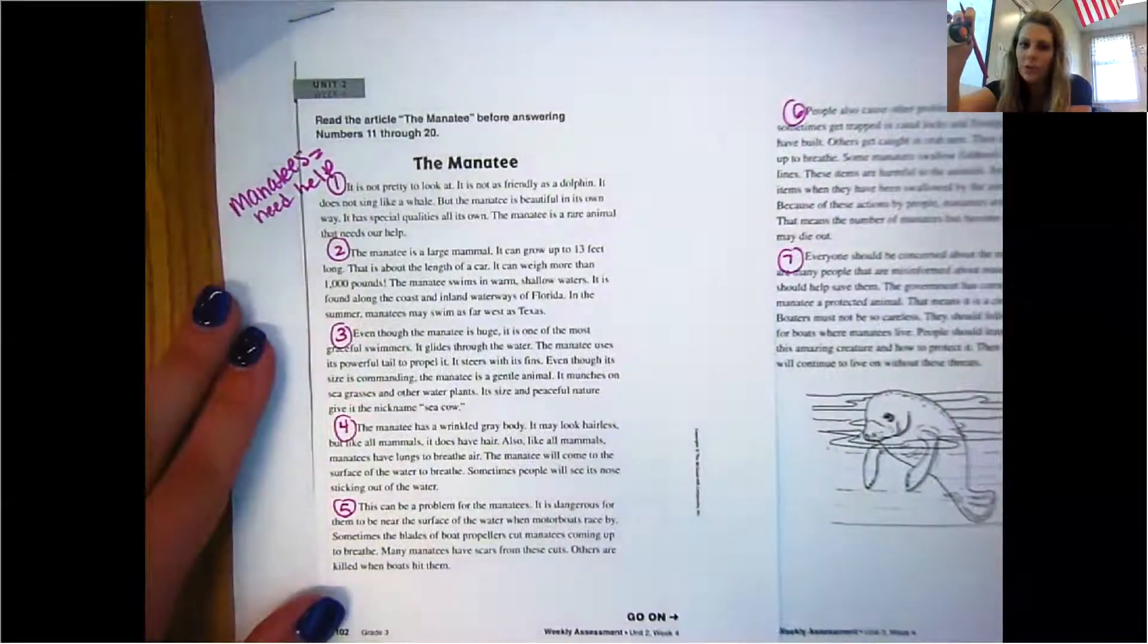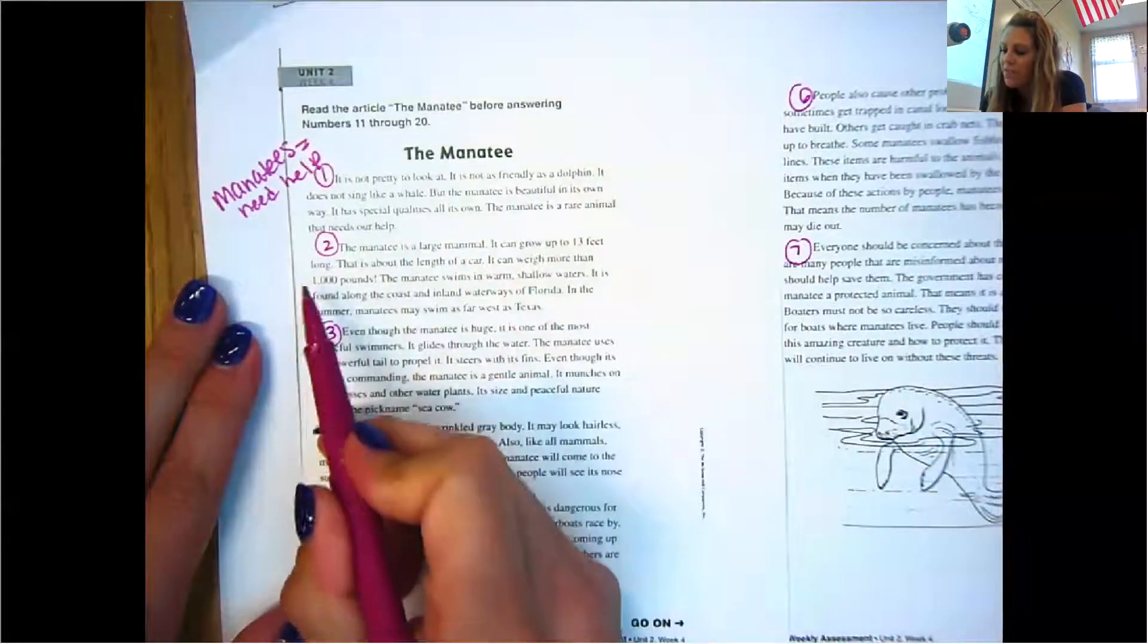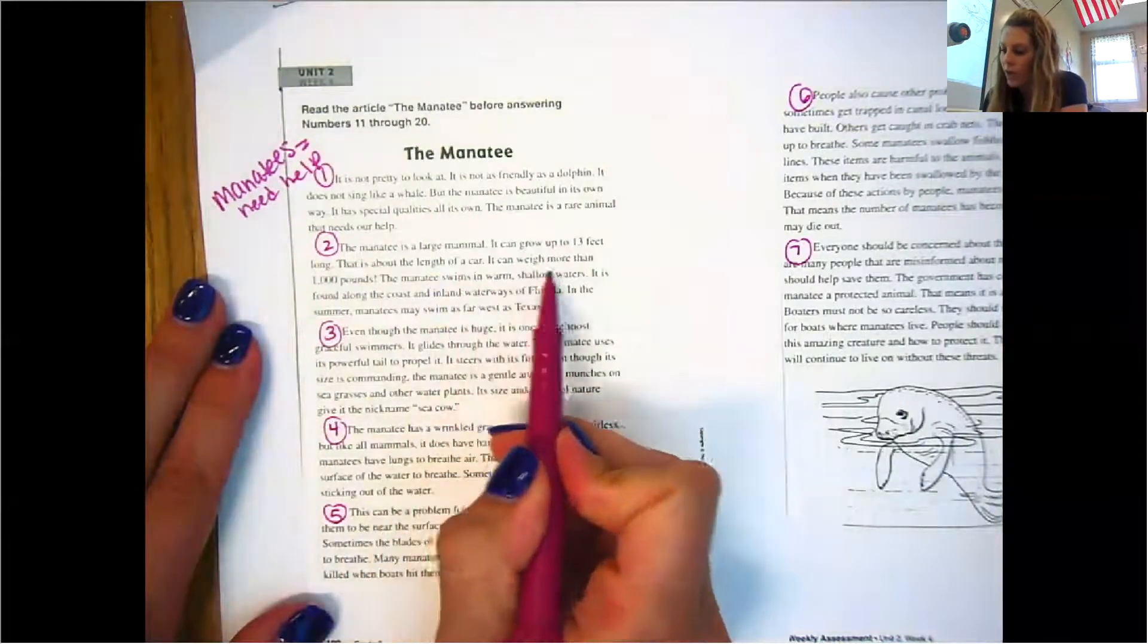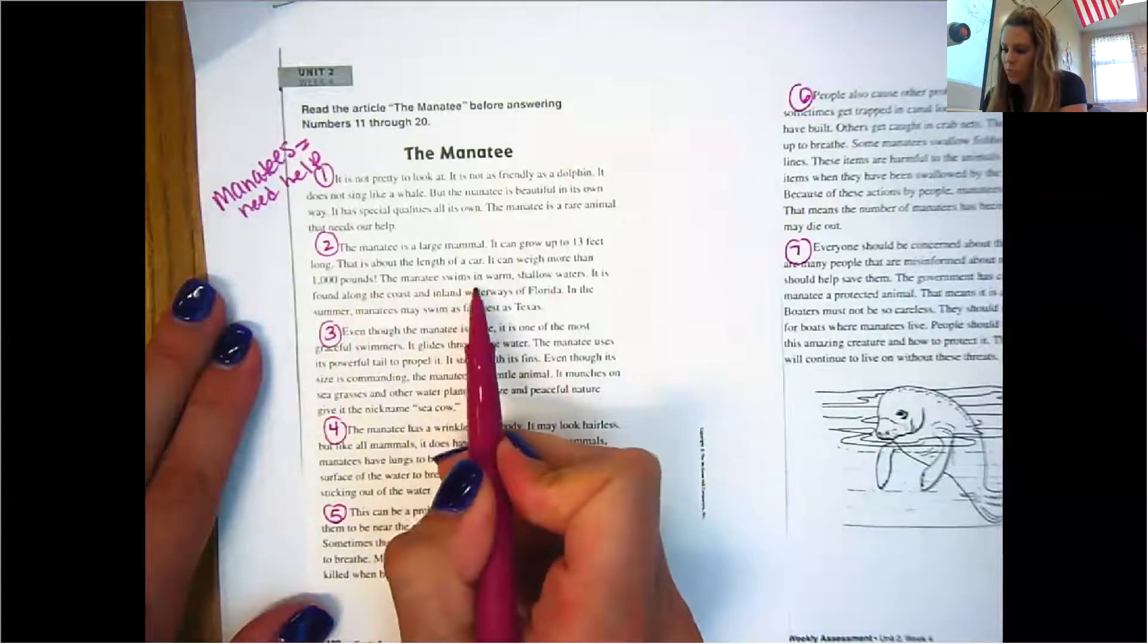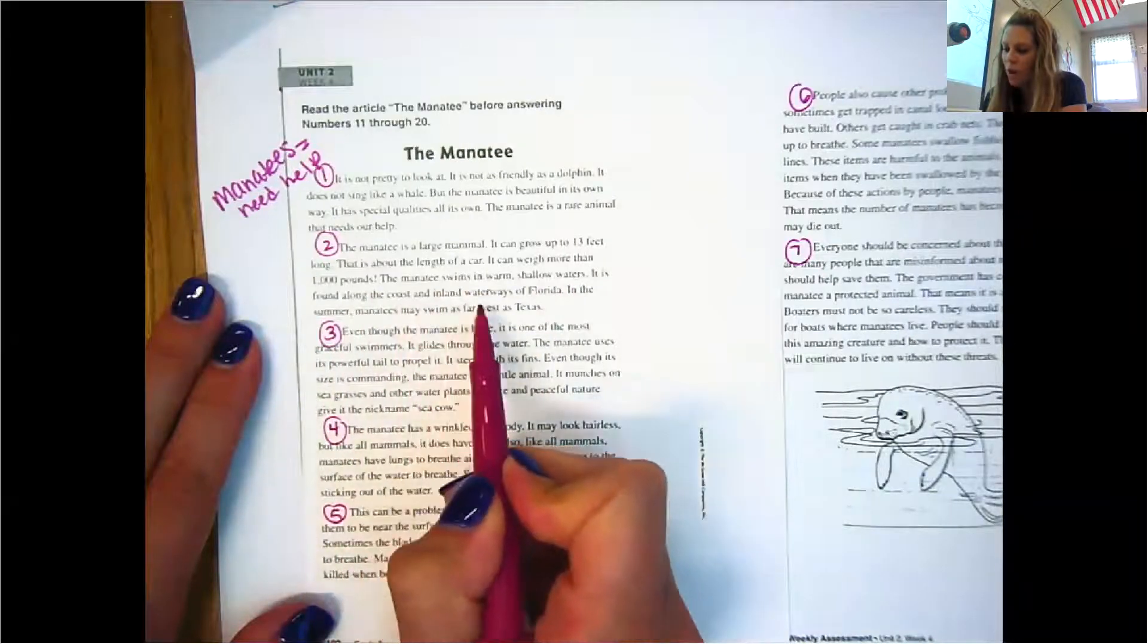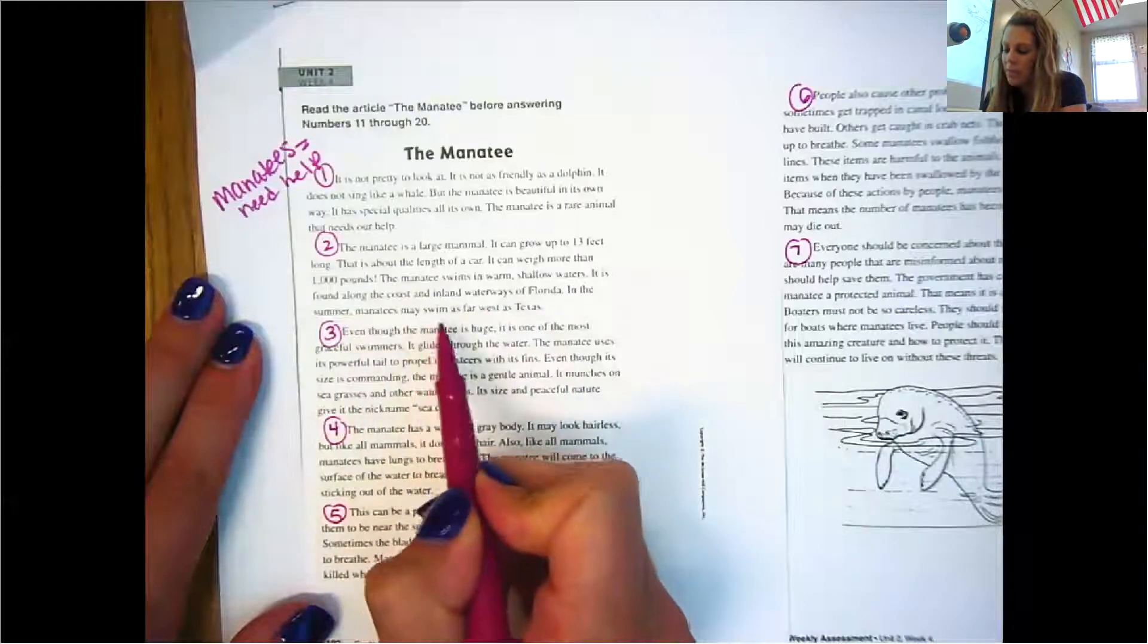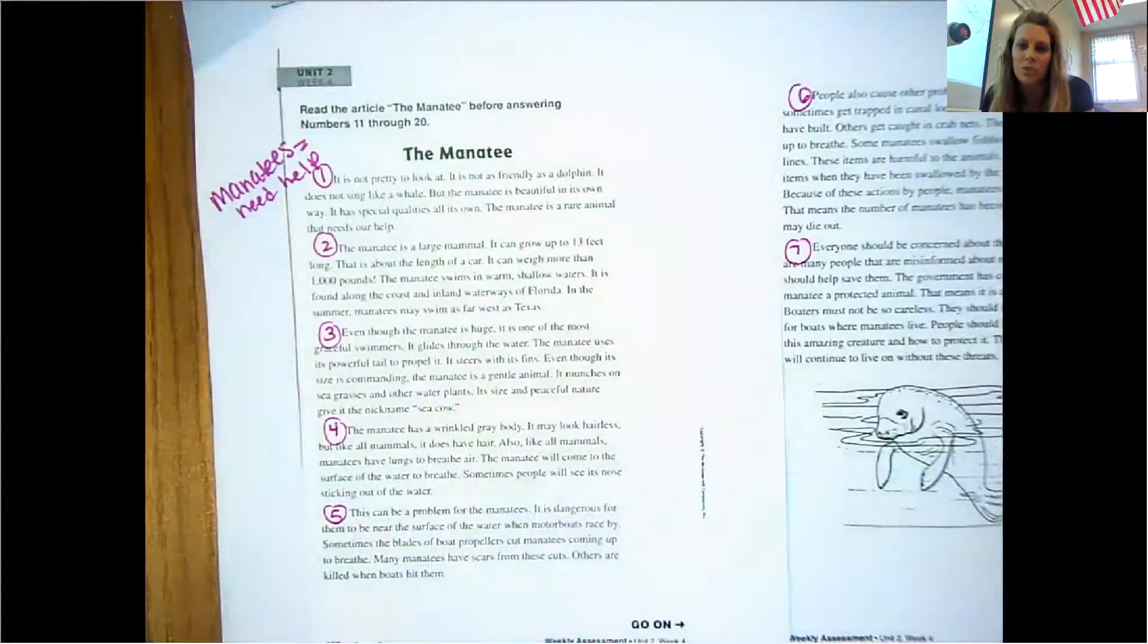Paragraph two, the manatee is a large mammal. It can grow up to 13 feet long. That is about the length of a car. It can weigh more than 1,000 pounds. The manatee swims in warm, shallow water. It is found along the coast and inland waterways of Florida. In the summer, manatees may swim as far as Texas.